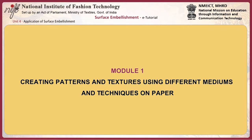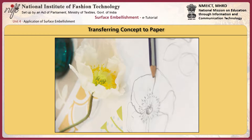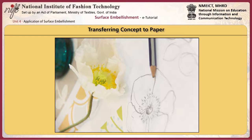This module explains how to create patterns and textures using different mediums and techniques on paper. Once concepts are created from the source of inspiration, they are to be transferred onto paper — the concept starts taking form at this stage. The idea or method to be adopted is rendered on paper to depict the final look of the fabric embellishment.